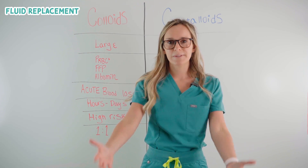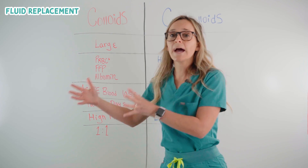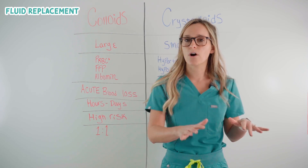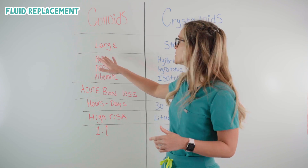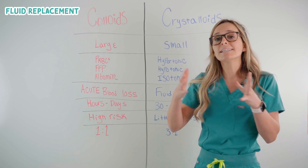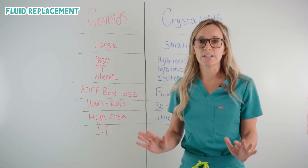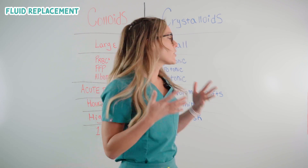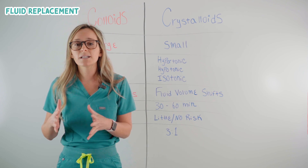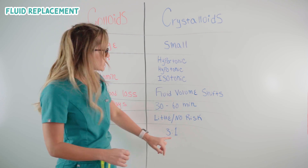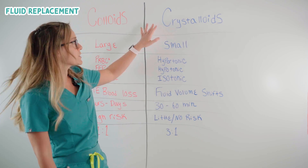Lastly, let's look at fluid replacement. Colloids have a one-to-one fluid replacement, which means fluid volume out equals fluid volume replaced. For example, if your patient loses one liter of blood, we can replace that with one liter of packed red blood cells — a one-to-one ratio. Crystalloids are a little different; we have a three-to-one ratio. So if our patient lost one milliliter of blood, we need to replace that loss with three milliliters of crystalloids.